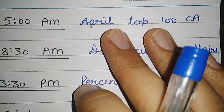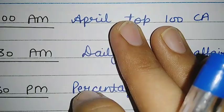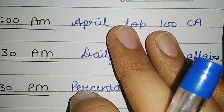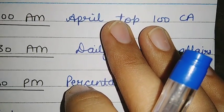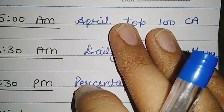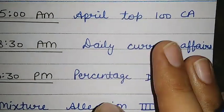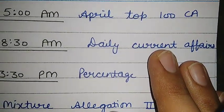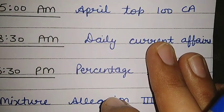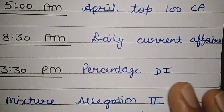April current affairs is remaining, so I am going to complete that tomorrow. After that, only February 100 question-answer remains, so the next day I will cover February current affairs also. Then there is daily current affairs, which we should keep doing on a daily basis.